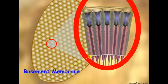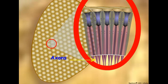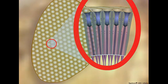Ommatidia sit on a basement membrane in the retina, and axons from the retinula cells combine below the membrane to form the optic nerve that leads to the protocerebrum of the insect brain. Let us see how insect compound eyes function to detect light and perceive visual information.